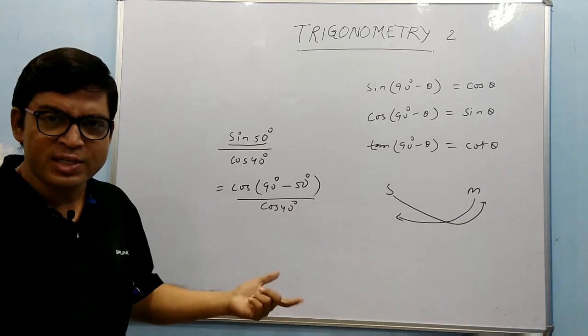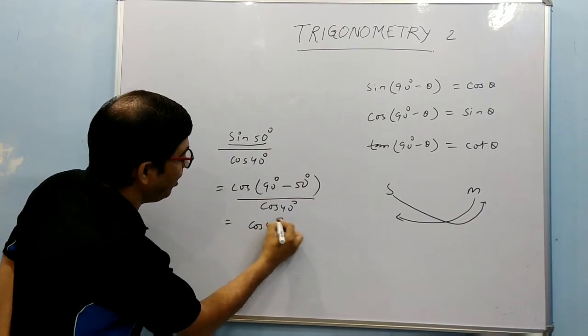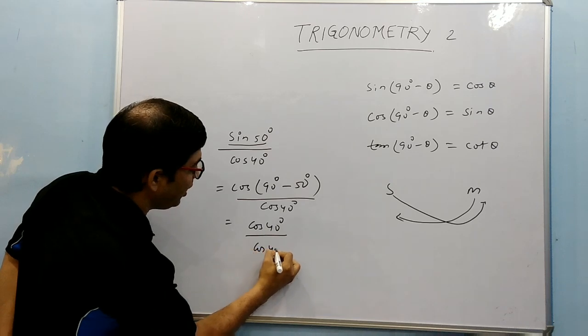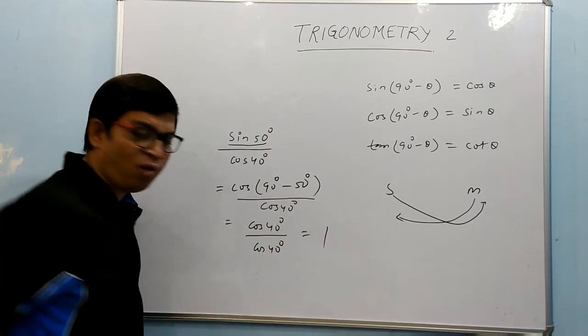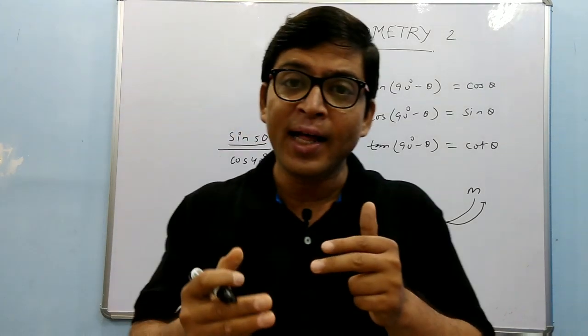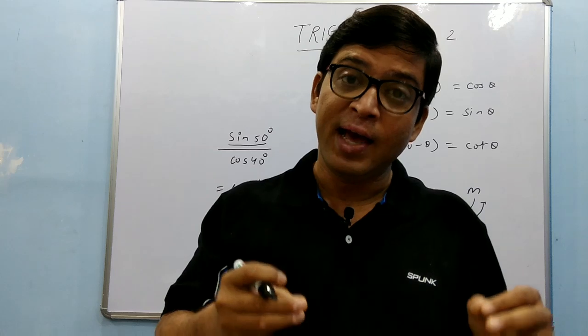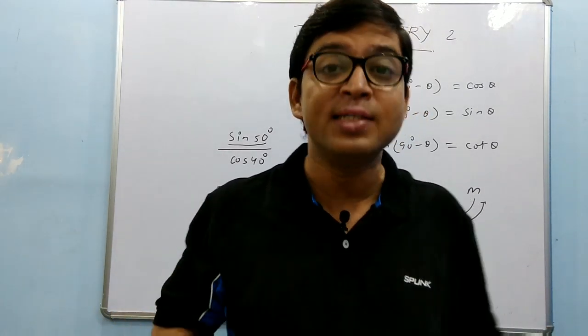Just go for actual subtraction. What is that? cos 40° / cos 40°, so you are getting one. You just follow this thing: convert one angle in terms of another, keep the other as it is, you will get the result.